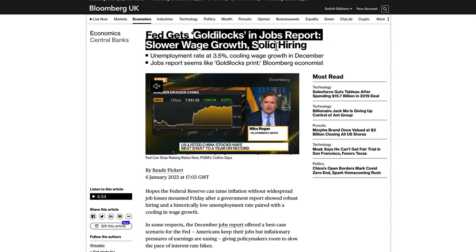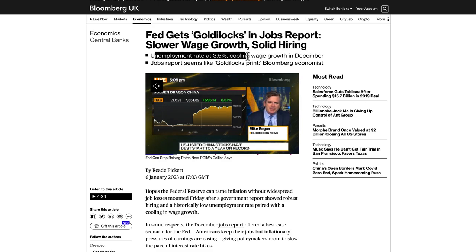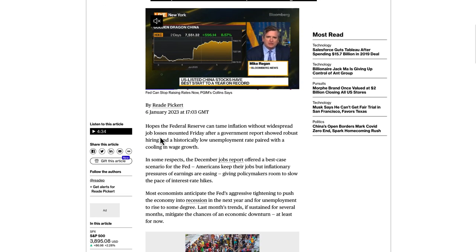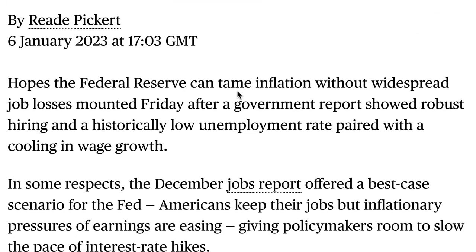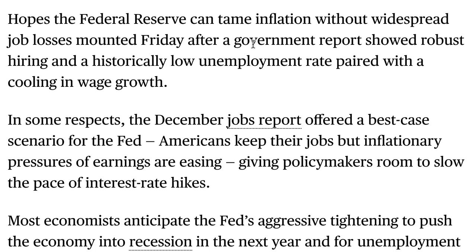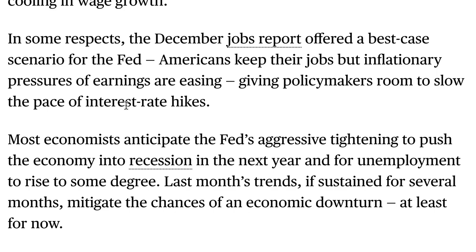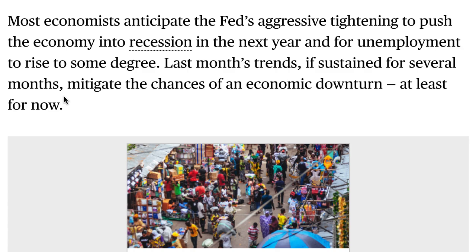The Fed got some decent news: 'Fed gets Goldilocks in jobs report — slower wage growth, solid hiring.' Unemployment rate at 3.5%, with cooling wage growth in December. Hopes that the Federal Reserve can tame inflation without widespread job losses mounted after a government report showed robust hiring and a historically low unemployment rate paired with cooling wage growth — which is actually what the Fed wants. The December jobs report offered the best-case scenario: Americans keeping their jobs, but inflationary pressures on earnings easing, giving policymakers room to slow the pace of interest rate hikes.